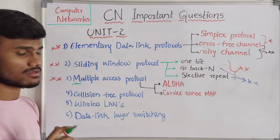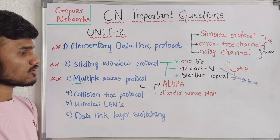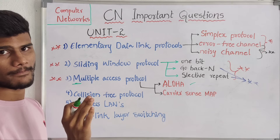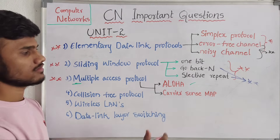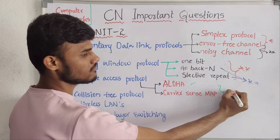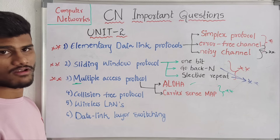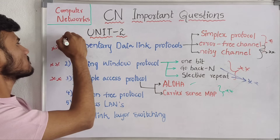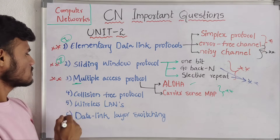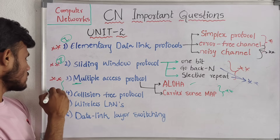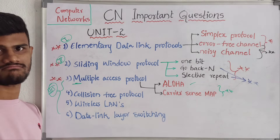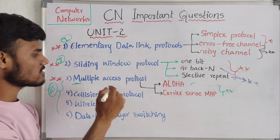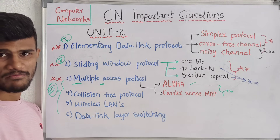So for multiple access protocol, if you have ALOHA and the carrier sense multiple access protocol, these two types of protocols are very important. Apart from this first part, the second part and third part are also there. If you have two parts perfect, you can handle the multiple access protocol section and score ten marks easily.